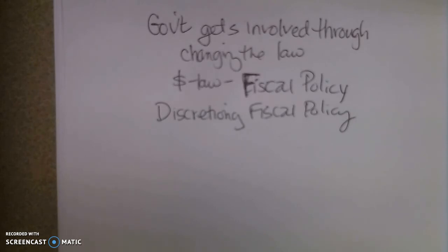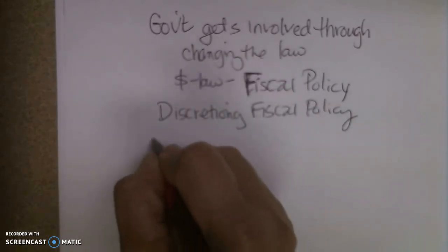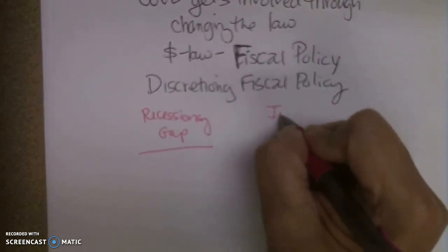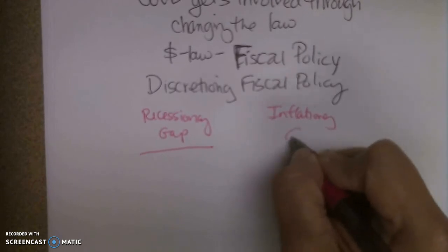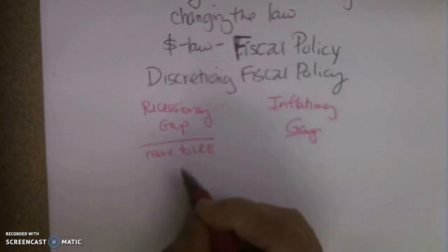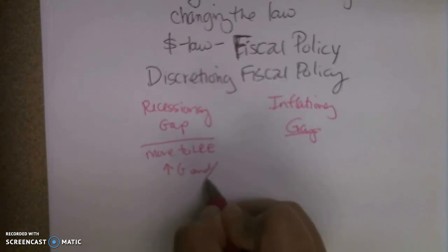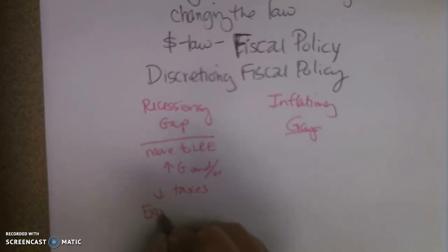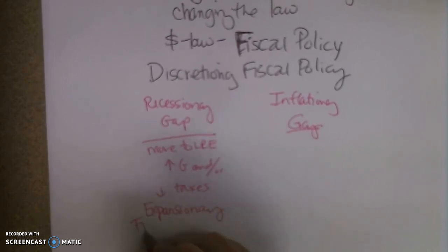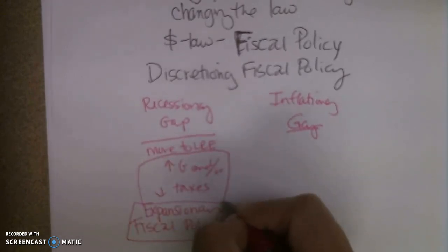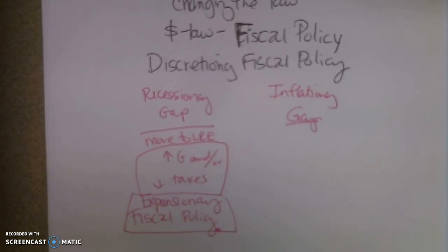If we're in a recessionary gap, Keynes would suggest one type of fiscal policy. If we're in an inflationary gap, another, because remember, one we're too big, one we're too small. So if we're in a recession, we're too small. So in order to move us to long run equilibrium, what he would suggest was to increase government spending and or decrease taxes. And that's personal income tax. What we call this is expansionary fiscal policy. And specifically, expansionary fiscal policy is deliberate actions by the government to increase government spending and or decrease taxes.